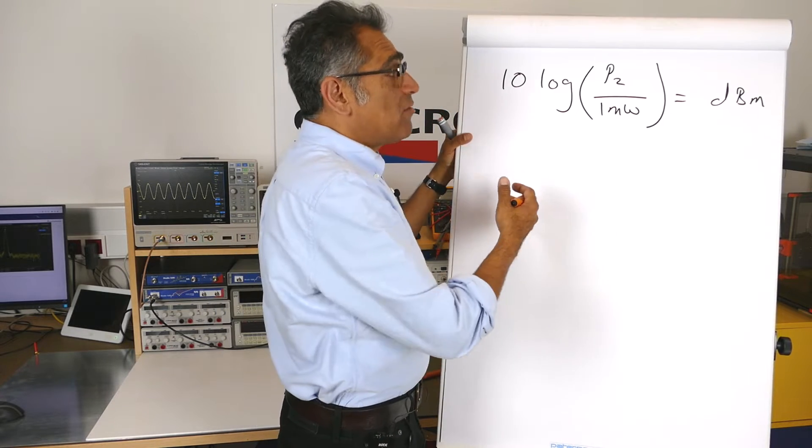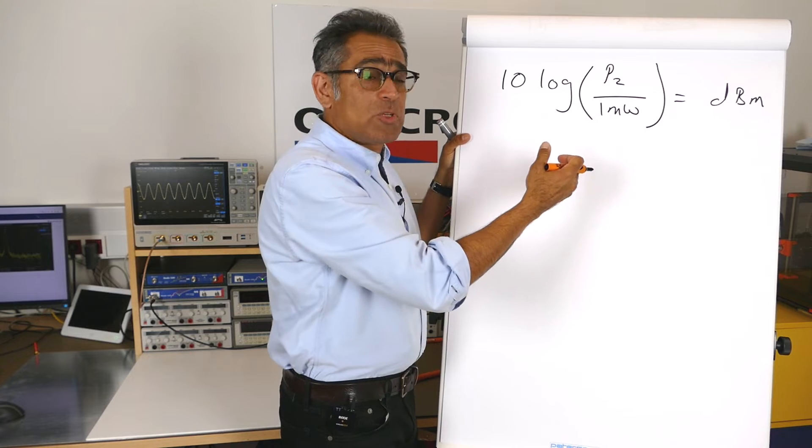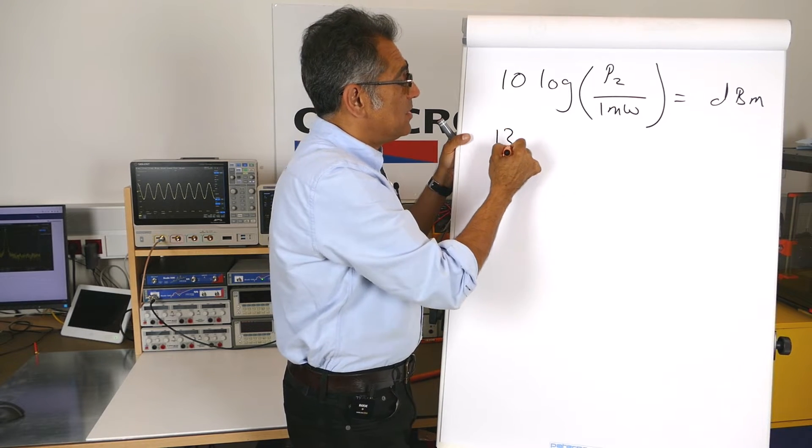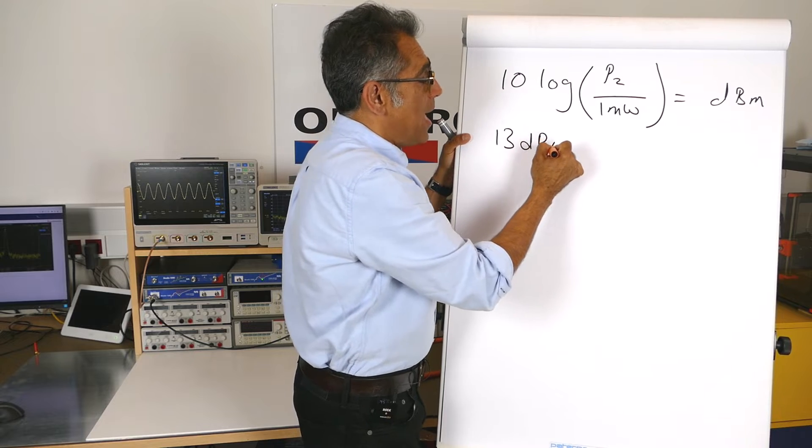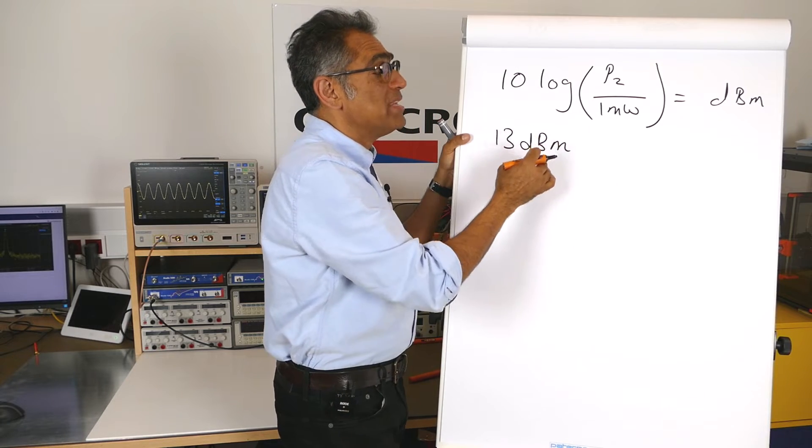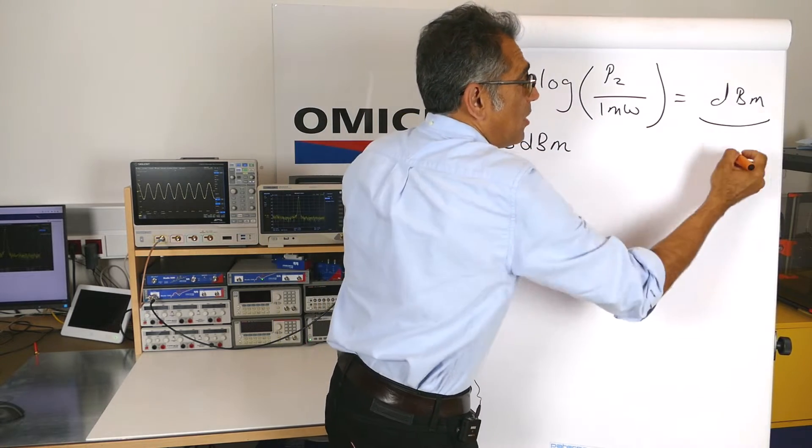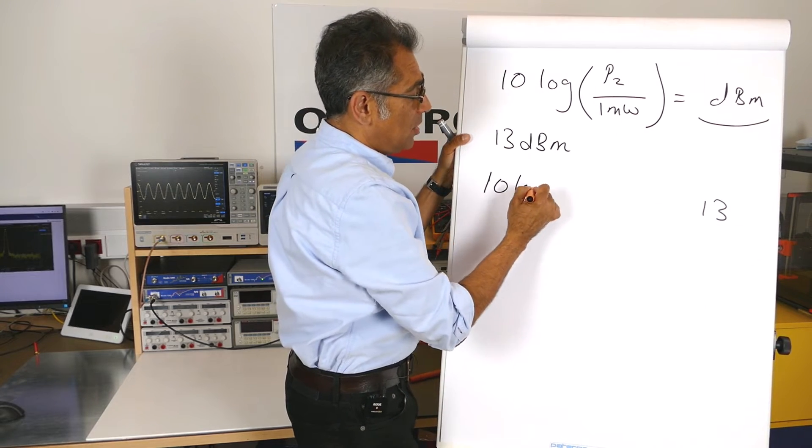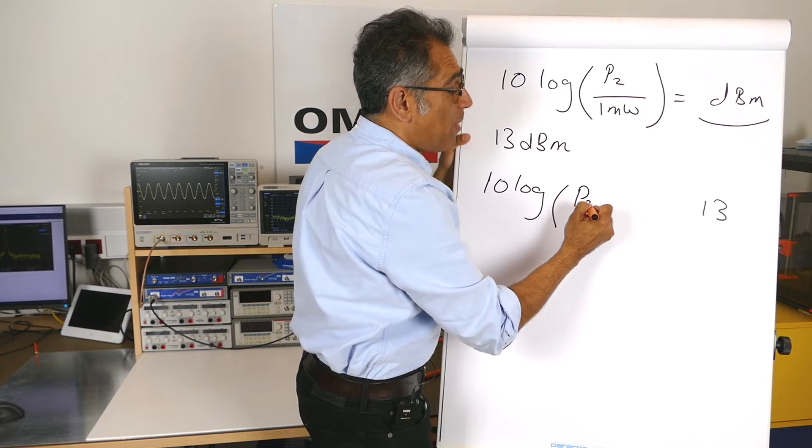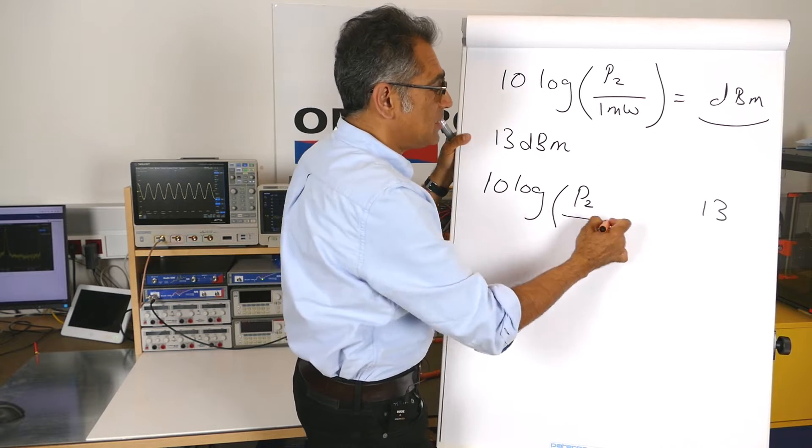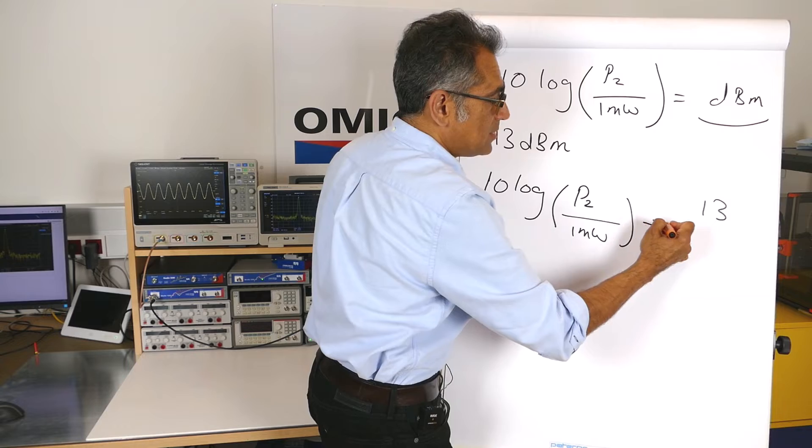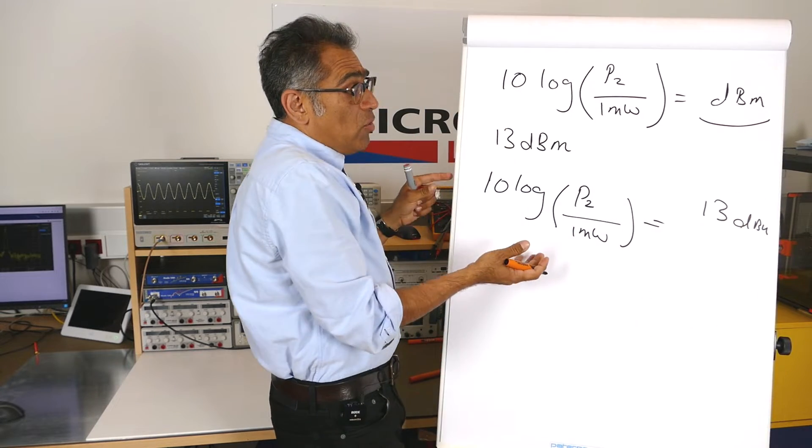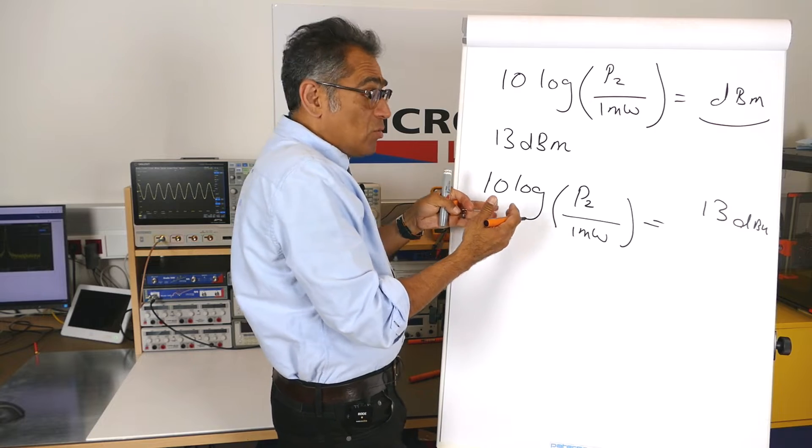So let us now say that we have got an instrument whereby the output power is defined as being 13 dBm. We know that that is dBmW, so this part is 13, so 10 log of whatever power we have, which is not in dBs, divided by 1 mW is equal to 13 dBm.